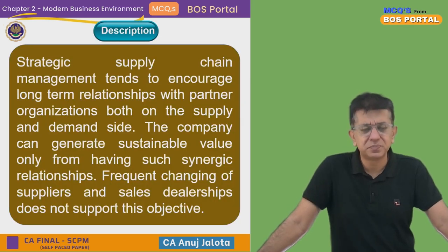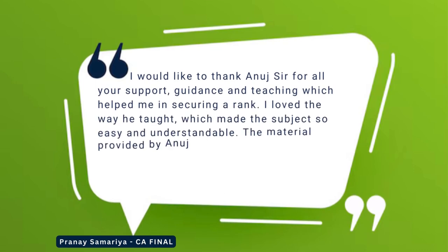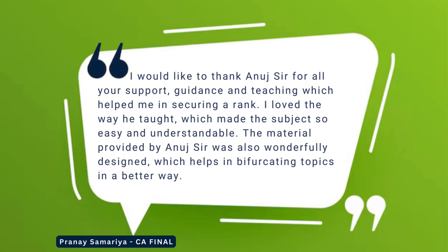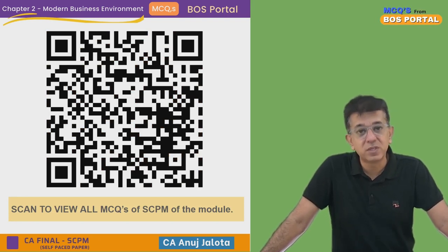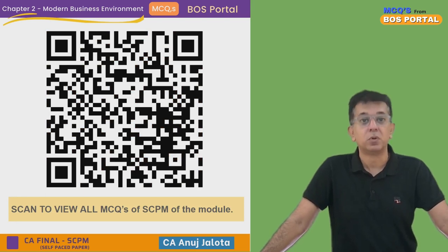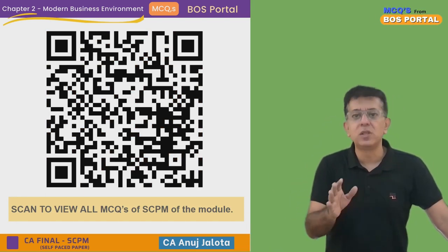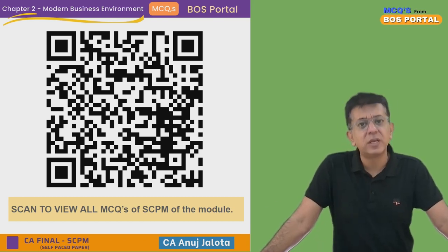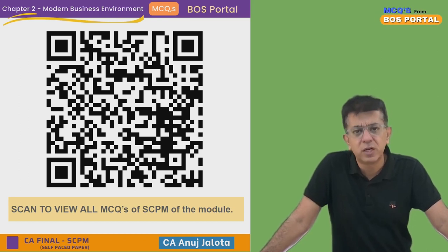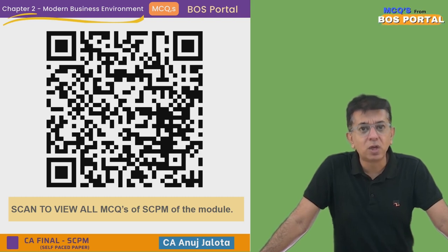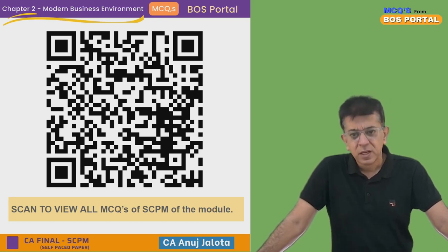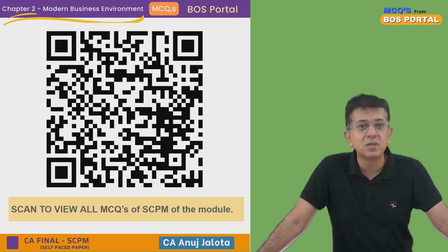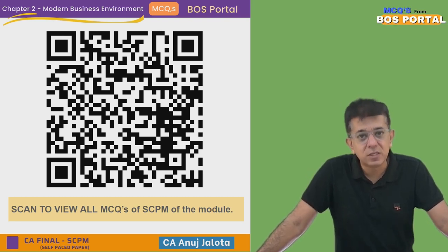That is the correct answer — our video is done. This QR code gives you the playlist of MCQs from the CA Final SCPM modules. All the MCQs from all chapters have been covered; there is a separate playlist for each chapter. You can browse our YouTube channel to find them. We are putting in a lot of effort to ensure this subject comes to you in a proper way — not only to help you pass but to give you the knowledge you need for your business. Thank you so much, I'll see you in the next video. Bye.